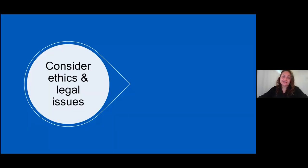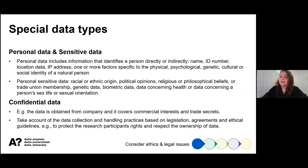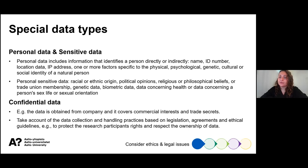When you have an idea of what kind of data you'll be working with, consider the ethical and legal requirements. Will it involve personal data? Does it need to be anonymized? Personal data includes information that identifies a person directly or indirectly — names, ID numbers, location data, IP address, or one or more factors relating to a physical, psychological, genetic, cultural or social identity of a natural person. Keep in mind that whilst a single identifying factor might not pinpoint an individual, it doesn't take many factors used together to identify a person.